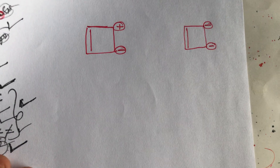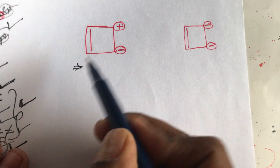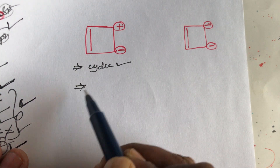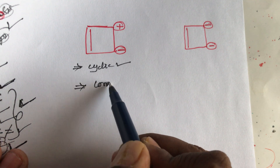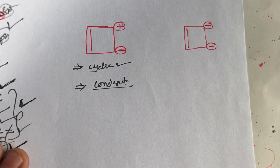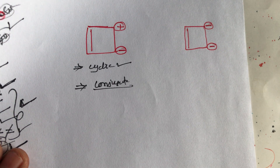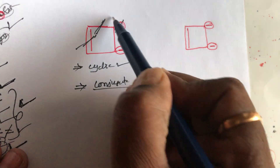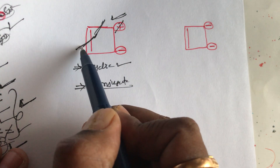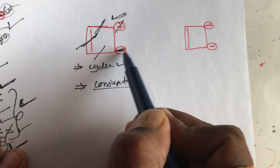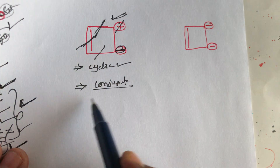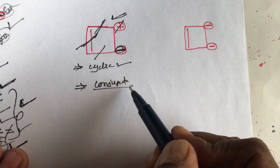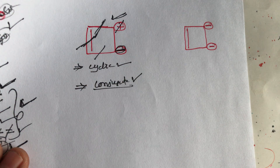What about the second compound? At the same conditions — first condition: compound must be cyclic — satisfied. Second condition: compound must be conjugated. There is a double bond, then single bond, then positive charge on the upper side — conjugation is possible. On the lower side: double bond, then single bond, then negative charge — conjugation is also present. So the complete structure is conjugated, and the second condition is satisfied.